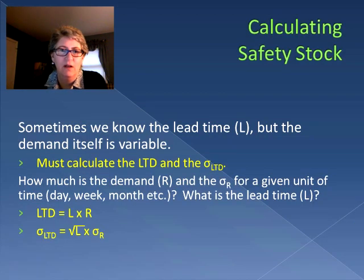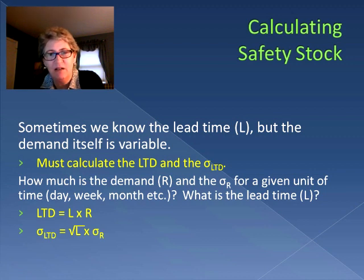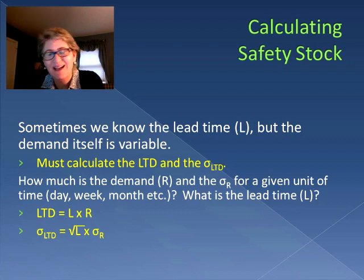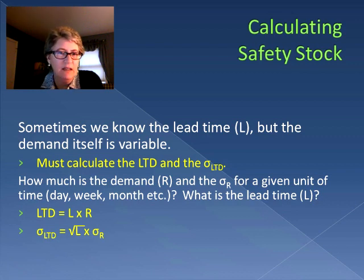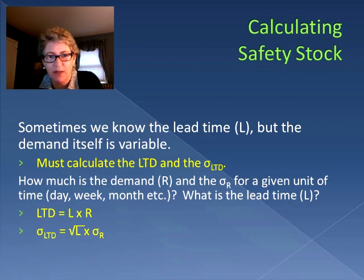Sometimes we know that the lead time is static — it's L and it's very constant — but the demand itself is variable. So we have to calculate the lead time demand and the standard deviation of lead time demand. We're typically given the demand (how much is expected to be used per given time: day, week, month, etc.) as well as the standard deviation for that demand and a lead time. To calculate the lead time demand, we multiply the lead time by the demand. To get the standard deviation of the lead time demand, we take the square root of the lead time and multiply it by the standard deviation of the demand.